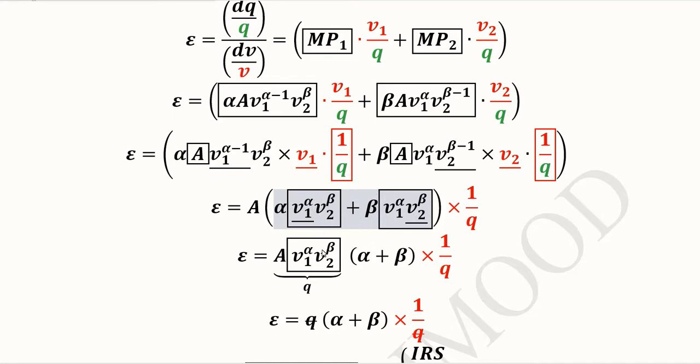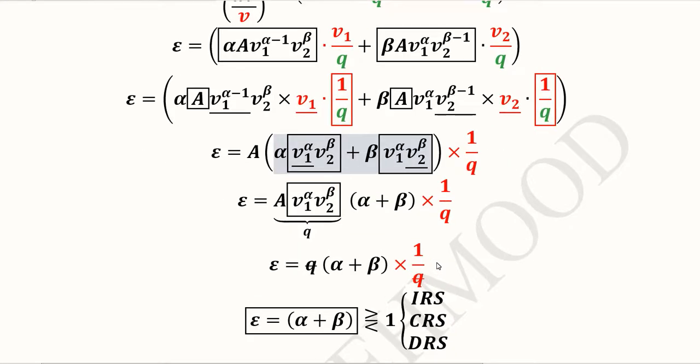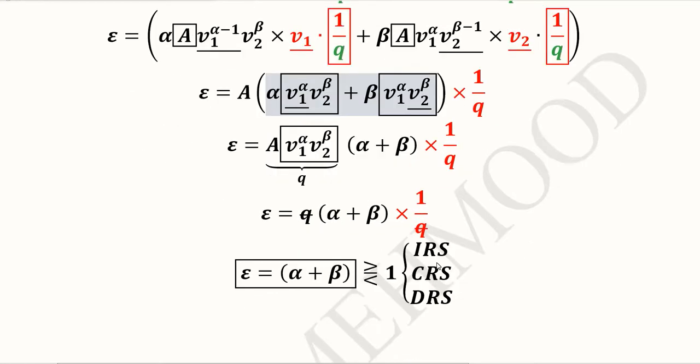And alpha plus beta is left, whereas 1 over Q was already taken as a common factor. So now we can focus on this term. This is actually the production function, so instead of this I can write Q. When I do this, this Q can be cancelled out with the Q in the denominator.